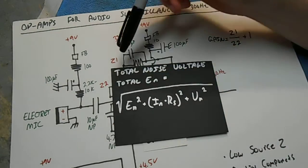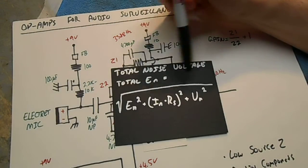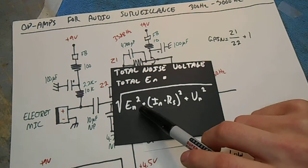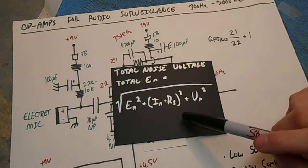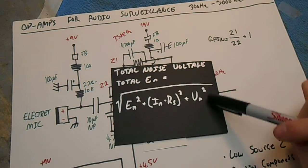Then to determine the total noise voltage, you take the square root of your E sub N squared plus I sub N times R sub S squared plus your thermal noise E sub N squared.